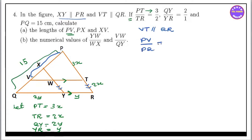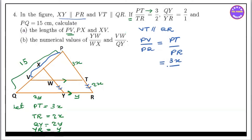So BV by BR — using the ratio — BD by BR. So BD, so 3x by BR. So 3x plus 2x equals 5x. And BV by BQ — BD by BQ — equals 15.